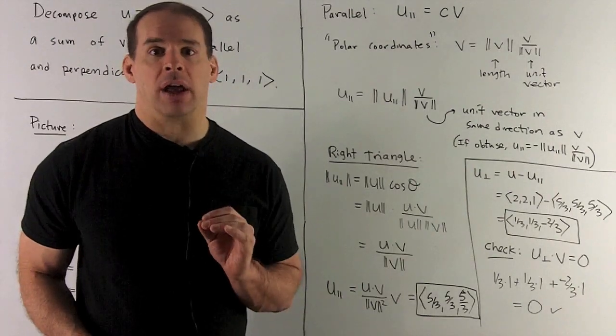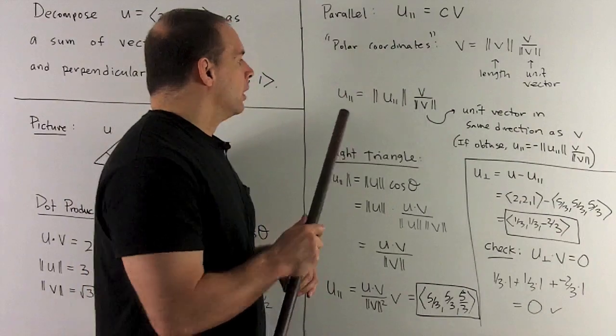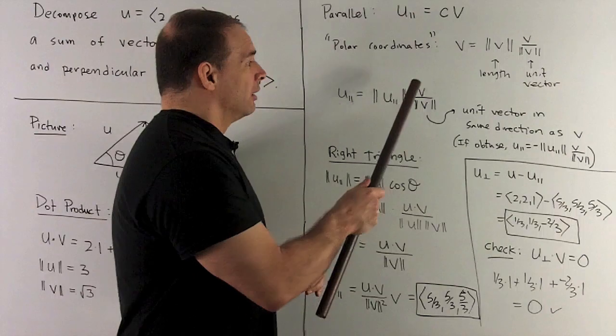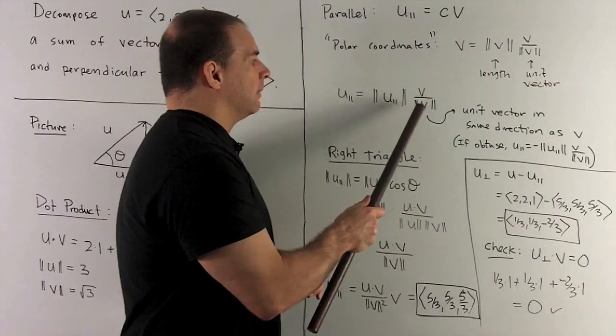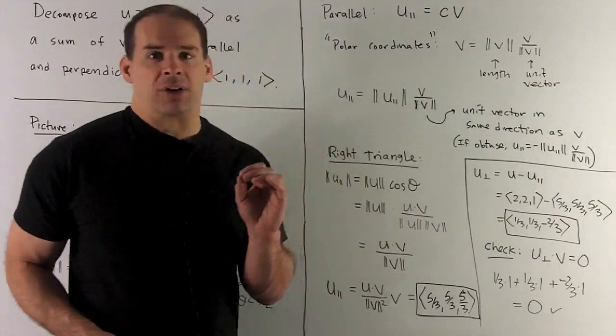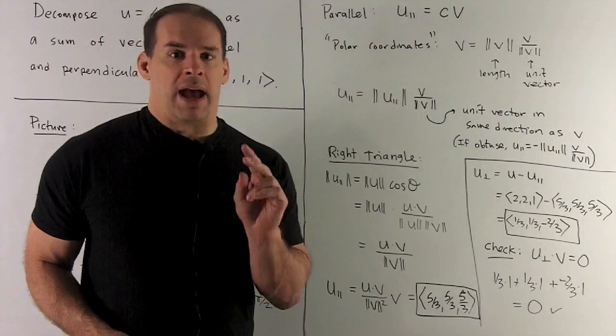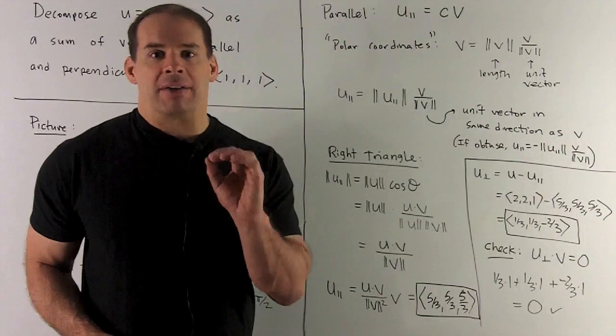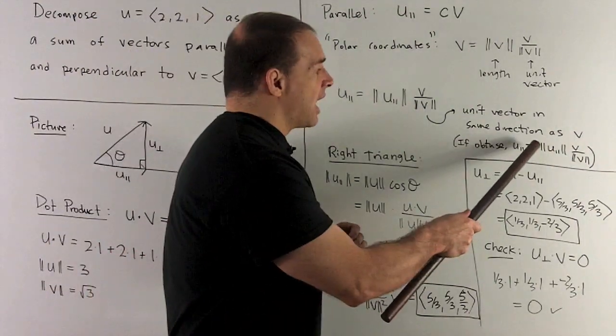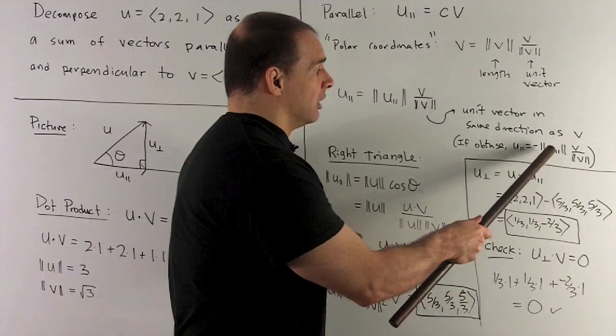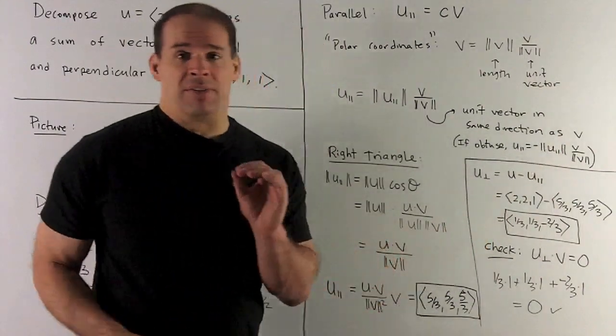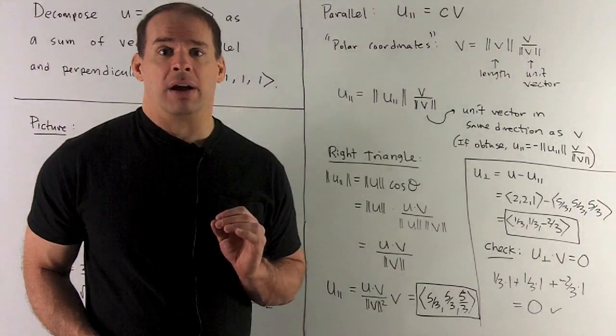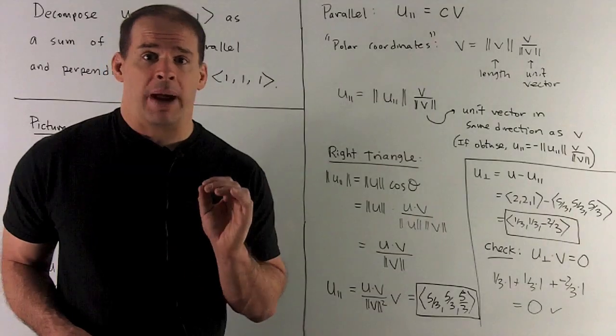Let's apply that to u parallel. So u parallel is going to be equal to the length of u parallel times v over the length of v. That's going to be the unit vector in the same direction as v. Now, if I had an obtuse angle, I can't use that formula. I'd have to modify it by putting in a minus sign, because if I'm using the scalar length of u parallel, that's going to give a positive number. If I have an obtuse angle, I have to have a negative number in there.